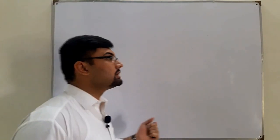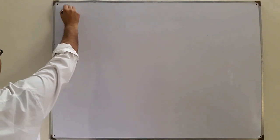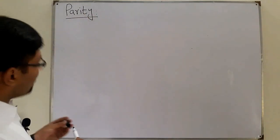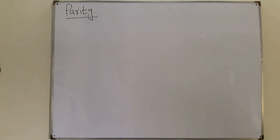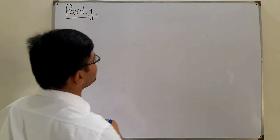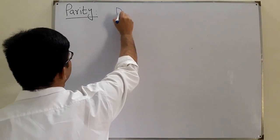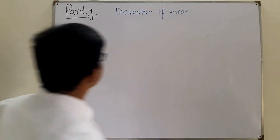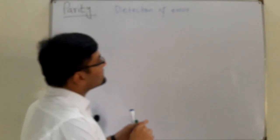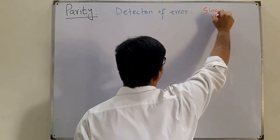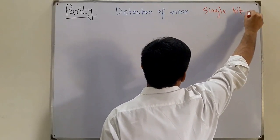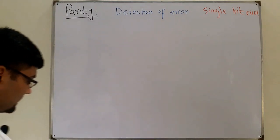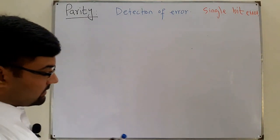Before Hamming code, we need to understand something called parity. Parity is a concept related to detection of errors. It only relates to a single bit error — if the error is more than a single bit, parity has nothing to do with it.